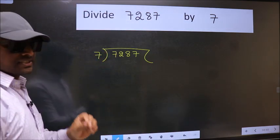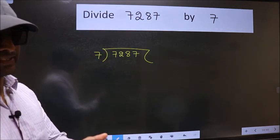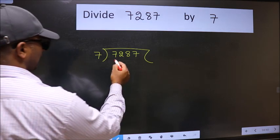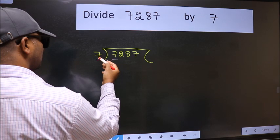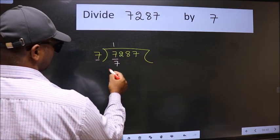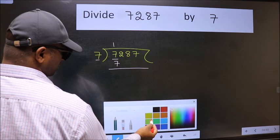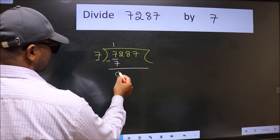This is your step 1. Next, here we have 7 and here 7. When do we get 7 in 7 table? 7 once 7. Now we should subtract. We get 0.